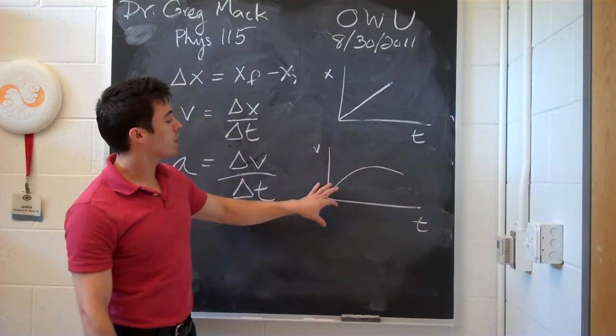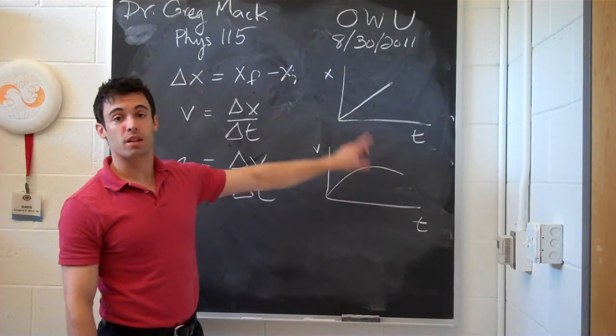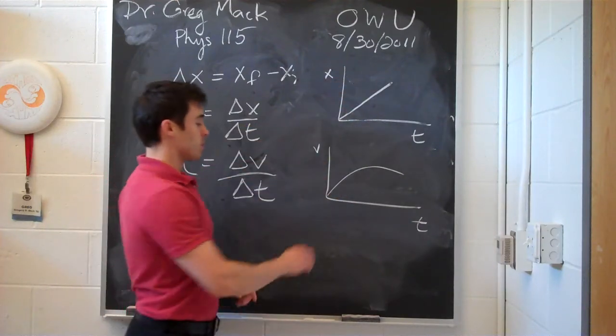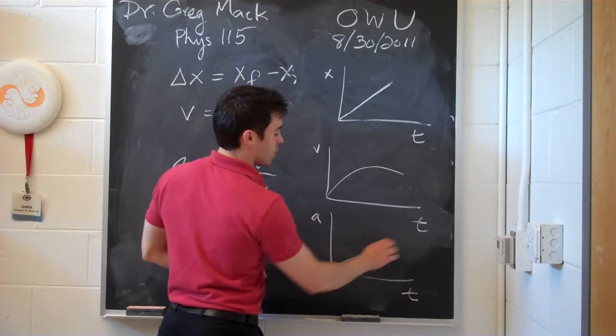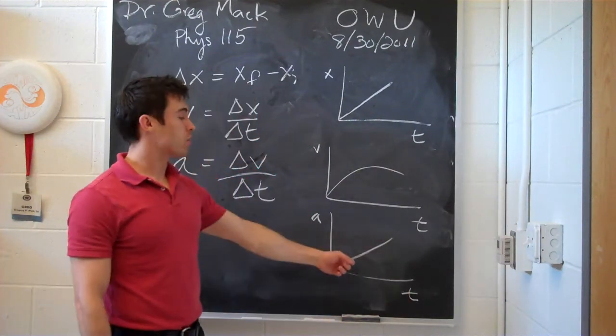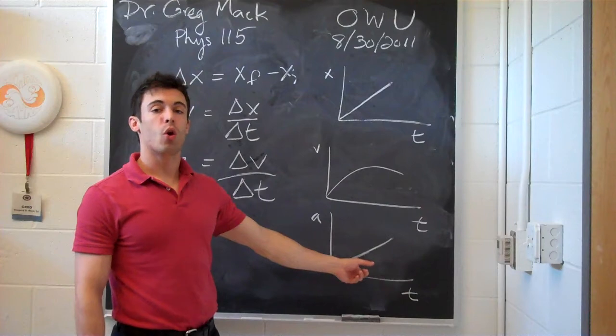And if you were to look at the area under the curve of this, you would get the displacement, as I just mentioned before. And if you had a graph of a versus t, and looked at this graph, then the area under this segment here would be your velocity.